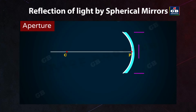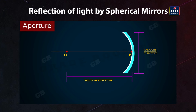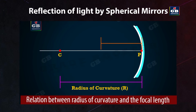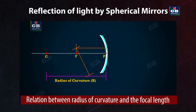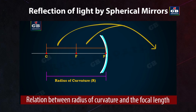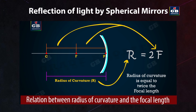We discuss spherical mirrors whose aperture is smaller than their radius of curvature. The relationship between radius of curvature (R) and focal length (f): for spherical mirrors with small apertures, the radius of curvature equals twice the focal length — R = 2f, or f = R/2. This means the principal focus lies midway between the pole and the center of curvature.